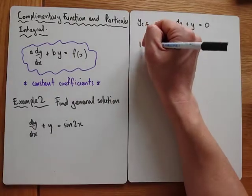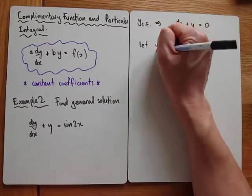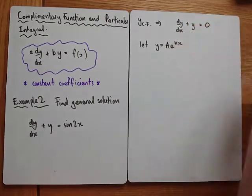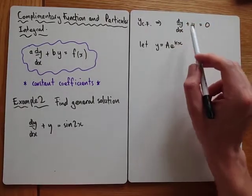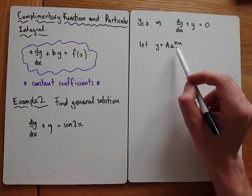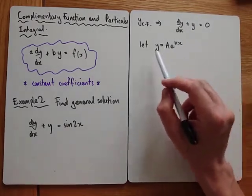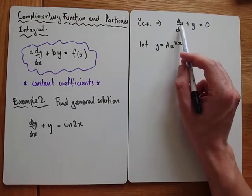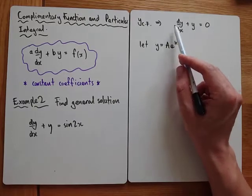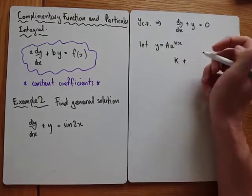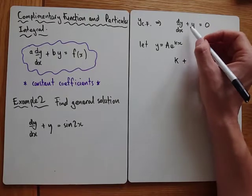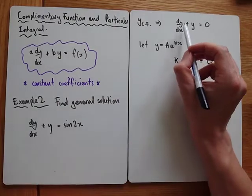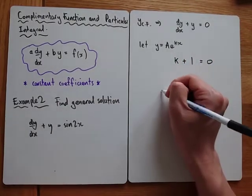We know that the complementary function is always going to be an exponential, so I would just say let y equal A e to the kx. If you want, you can differentiate this and substitute it in, then take out common factors like we did in the last video. But you can skip straight to this step: if y equals A e to the kx, the coefficient of dy/dx becomes our k coefficient, and the coefficient of y becomes our constant.